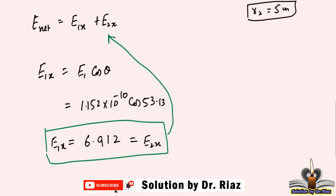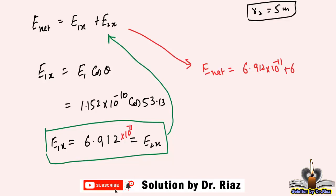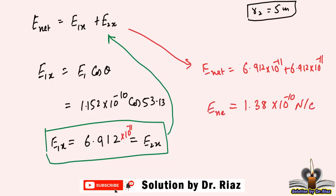So the net electric field equals E1x + E2x = 6.912×10⁻¹¹ + 6.912×10⁻¹¹ = 1.38×10⁻¹⁰ N/C. The unit is newton per coulomb. So the net electric field is 1.38×10⁻¹⁰ N/C. This is the final answer.